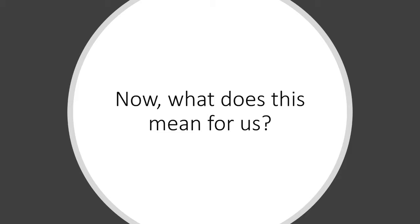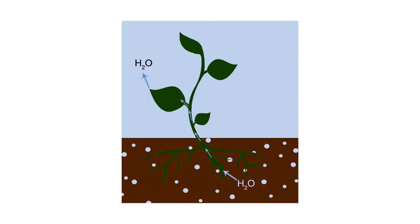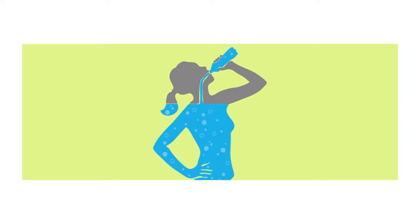Now, what does this mean for us? Have you ever wondered how trees draw water from the ground? The cohesive and adhesive forces create a pull on the water column for water to be transported from the roots to the leaves. Likewise, the human body uses cohesion to help your body cells rehydrate.